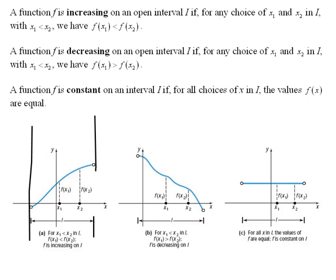Now it says it is increasing in that interval if for any choice of x1 and x2. In other words, if we choose any two x values we want to, then it says with x1 less than x2, meaning the x1 is smaller than the x2 or to the left. Remember, smaller can also mean to the left of.